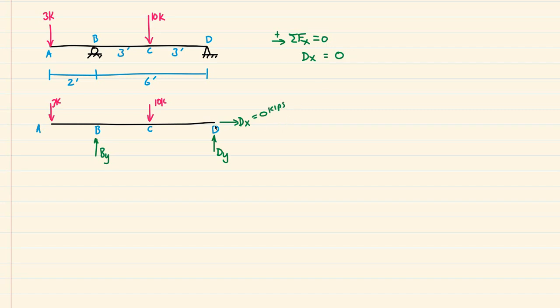The next thing I can do is actually take the moment about point D and figure out what B-Y is, this vertical reaction here at B. So I'm going to do sum of moments at point D and I'm going to say counterclockwise is positive. This should equal 0.